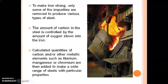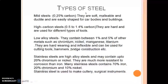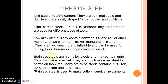Now all the impurities have been removed and the percentage of carbon can be adjusted. Based on the percentage of carbon, different types of steels can be made. These are the different types of steels you should know: mild steels, high carbon steels, low alloy steels, and stainless steels. It is important that you know the uses for each of these steels.